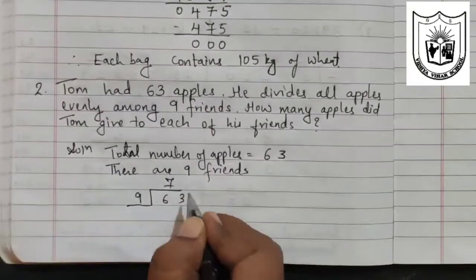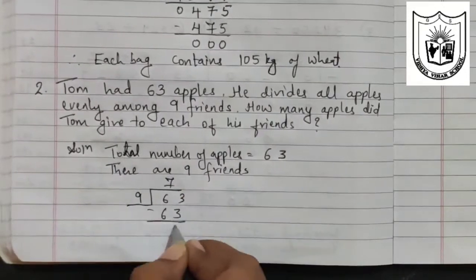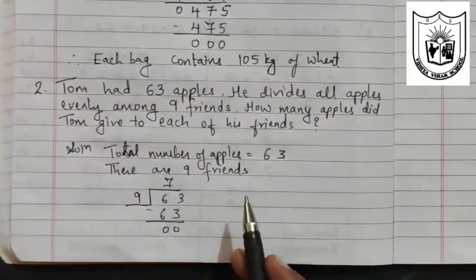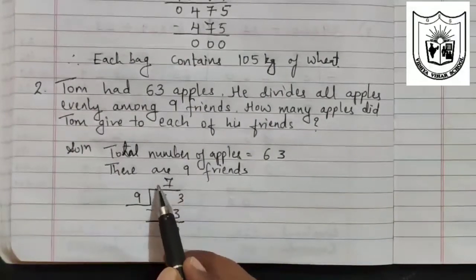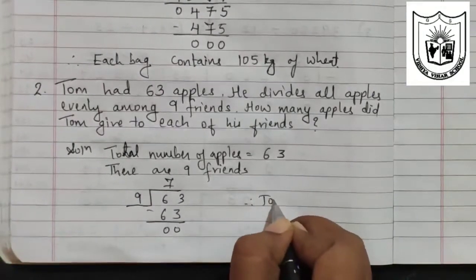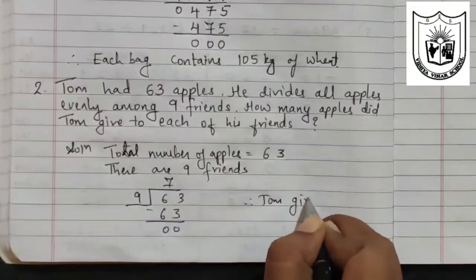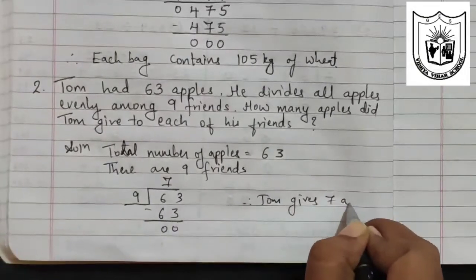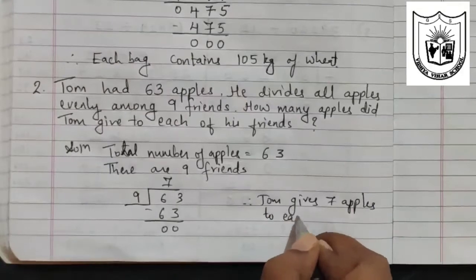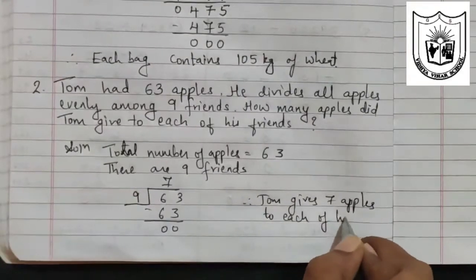So 9, 7 is 63. So the remainder here is 0. Therefore, we can say that Tom has given 7 apples each to his friends. So write that statement. Therefore, Tom gives 7 apples to each of his friends.